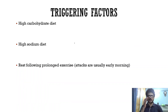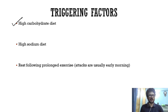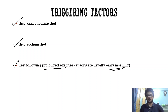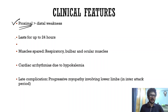The classical history is a young male who has a high carbohydrate and high sodium meal the night before — like pizza or pasta — goes to sleep, and wakes up in the morning with flaccid quadriparesis. Triggering factors include high carb diet, high sodium diet, and a period of rest following prolonged exercise. Attacks typically occur in the early morning.